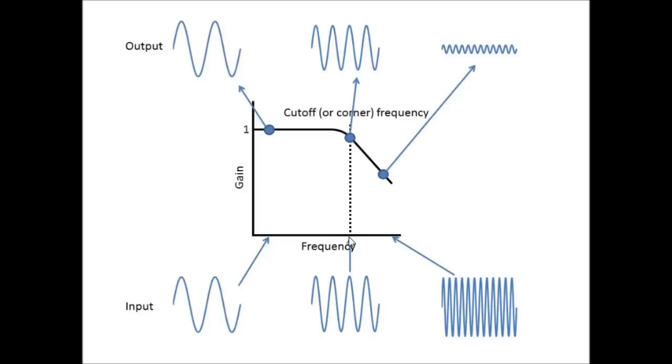Around the corner frequency the output will be slightly attenuated, so this output magnitude is a little bit less than the input magnitude, and in much higher frequencies the output will be significantly attenuated, meaning that our magnitude will be much less than the input magnitude.